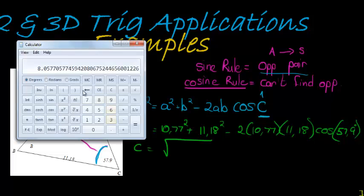Let's see - we've got 10.77 squared plus 11.18 squared minus 2 times 10.77 times 11.18 times cos of 57.9.